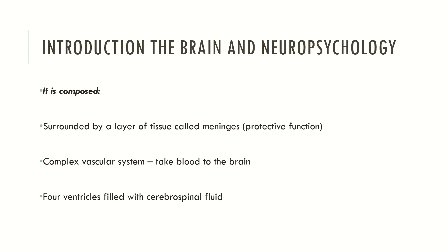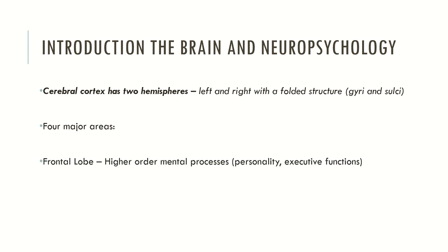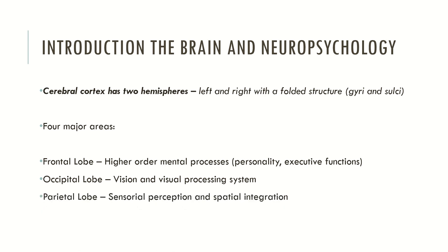Now let's see the cerebral cortex. The cerebral cortex has two hemispheres, left and right, and these hemispheres have a folded structure which are called gyri and sulci. The cerebral cortex is divided into four major areas. The frontal lobes, which are responsible mainly for higher order mental processes such as personality and executive functions. The occipital lobes, which are concerned with the functions of vision and visual processing. The parietal lobe, which is concerned with sensorial perception and spatial integration. And the temporal lobe, which is mainly responsible for memory, language, skills and emotional processing.